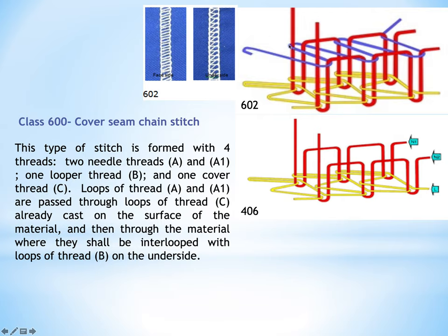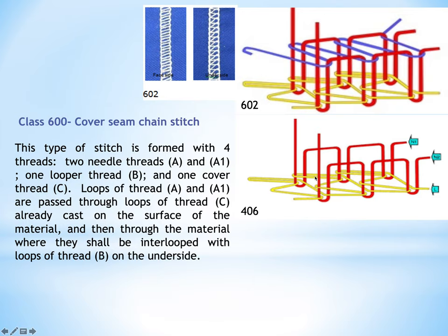The purple thread is the top covering thread and the yellow thread is the bottom covering thread. This stitch uses two needles — indicated by two red-colored threads — and two loopers. Stitch 602 has a resemblance to stitch 406, where stitch 406 is formed with two needles and one looper, with needle loops secured by interlooping and interlacement of the looper thread. In stitch 406, the looper thread serves as the bottom covering thread, which is why class 406 is also known as the bottom covering chain stitch.